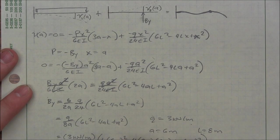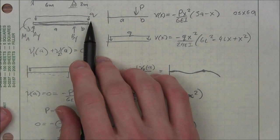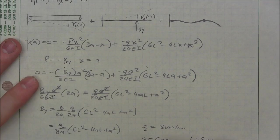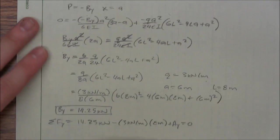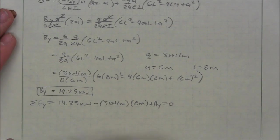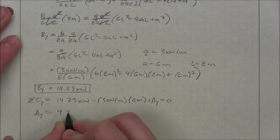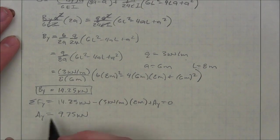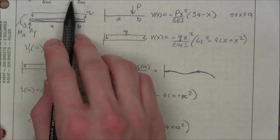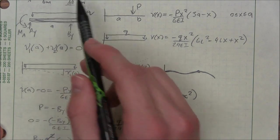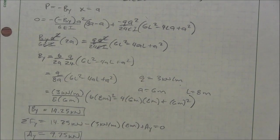And I have my distributed load, which is minus 3 kilonewton per meter times the length that that distributed load is distributed. So that's 8 meters plus my AY equals 0. So my AY ends up being 9.75 kilonewtons, which if you can imagine, since my support B is closer to the center, it makes sense that it would be taking more of the force. So 14 is bigger than 9. It kind of makes sense.